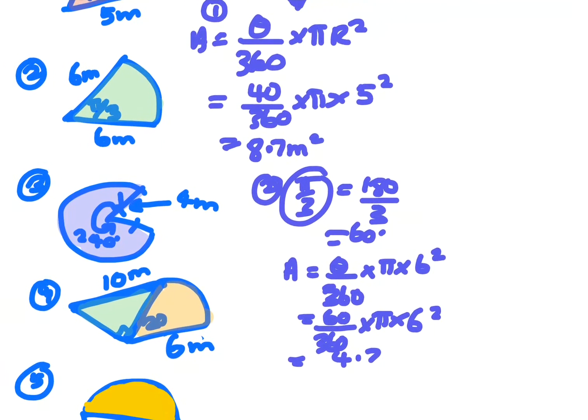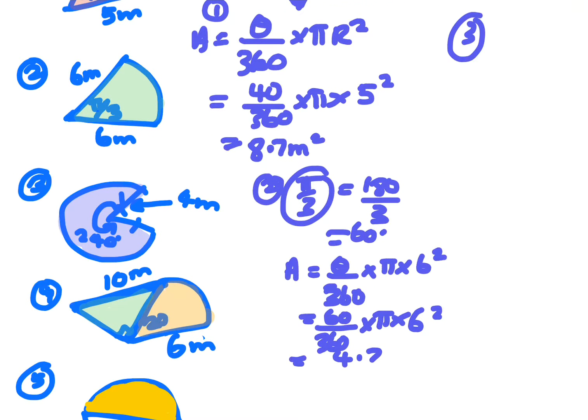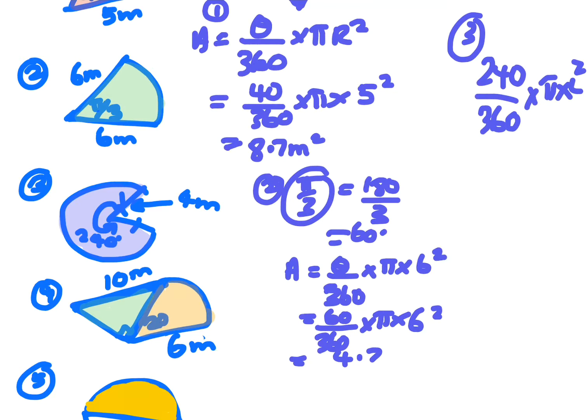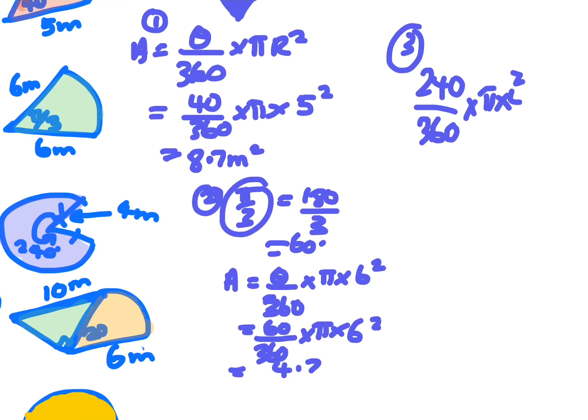Now we're just going to look at the third one. The third one, that's 240 degrees, so it's just 240 on 360 times pi times four squared. So 240 on 360 times shift pi times four squared, which will give you 33.5 meters square.